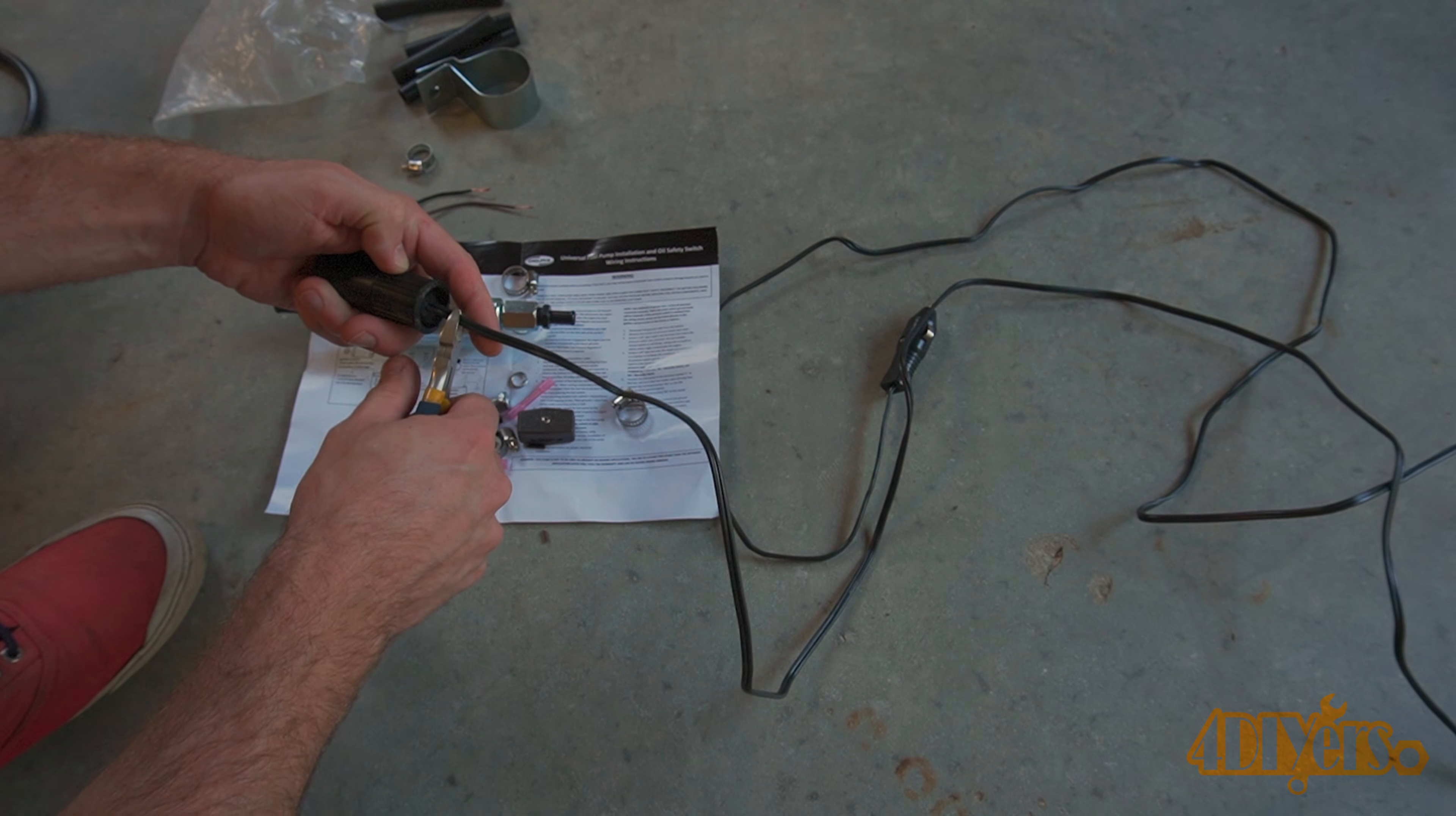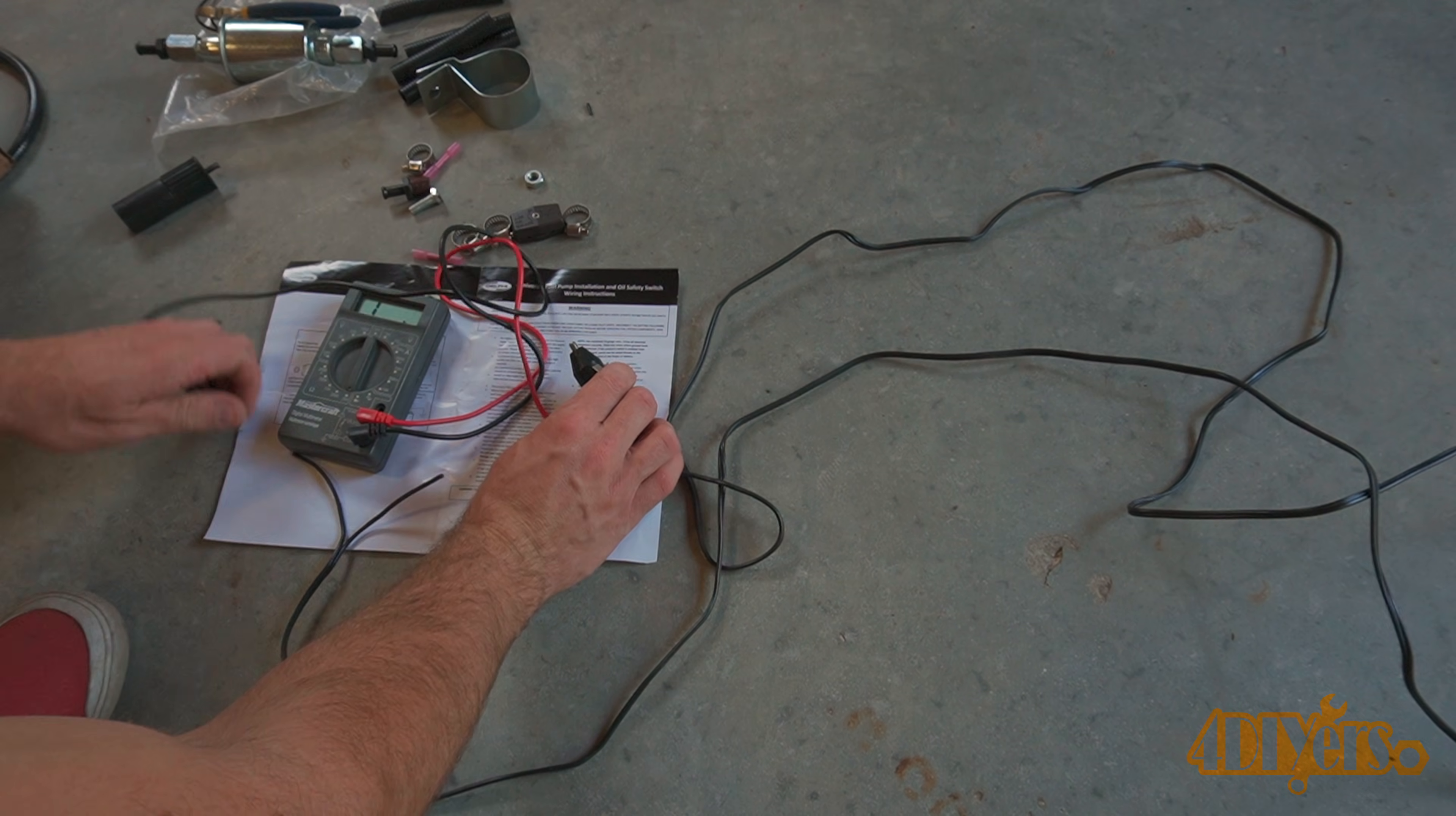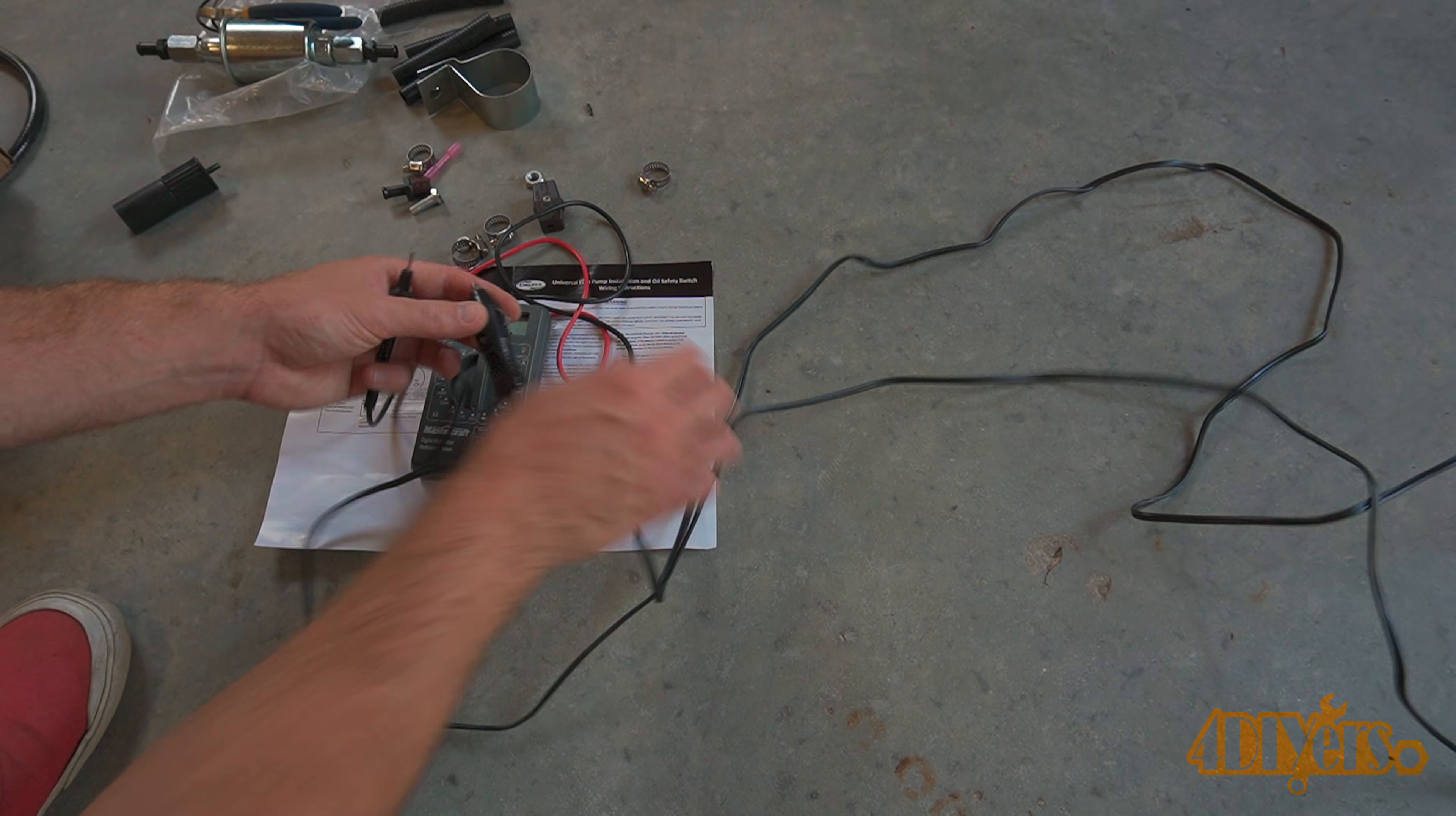The connector was then cut off the cigarette lighter wire. Both wires are the same color on the cigarette lighter. Using a multimeter I was able to determine which is the ground and which is the power. The center pin is the power and the outer contacts are the ground for the cigarette lighter plug. This is done by using a continuity test.